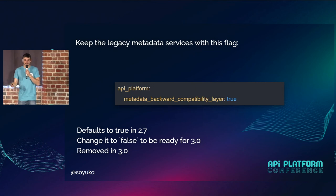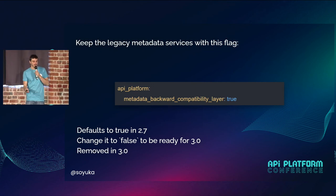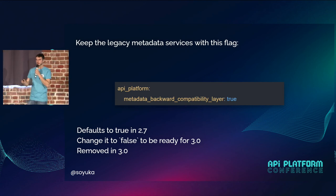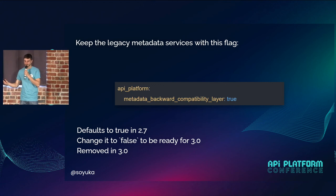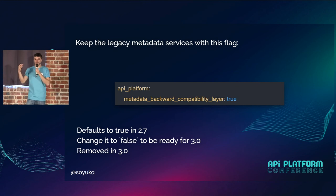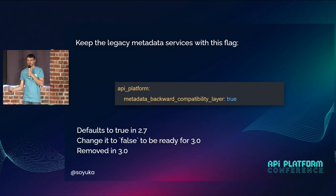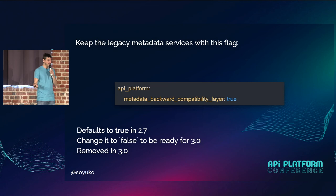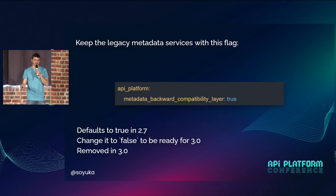So how does this work to upgrade? Basically, in 2.7 there is this new configuration flag — API Platform metadata backward compatibility layer — that is set to true. You install the new version, you put this flag to false, and you try to update the code until it works. Then in 3.0, we will remove this flag completely from the codebase. This helps you with deprecations.